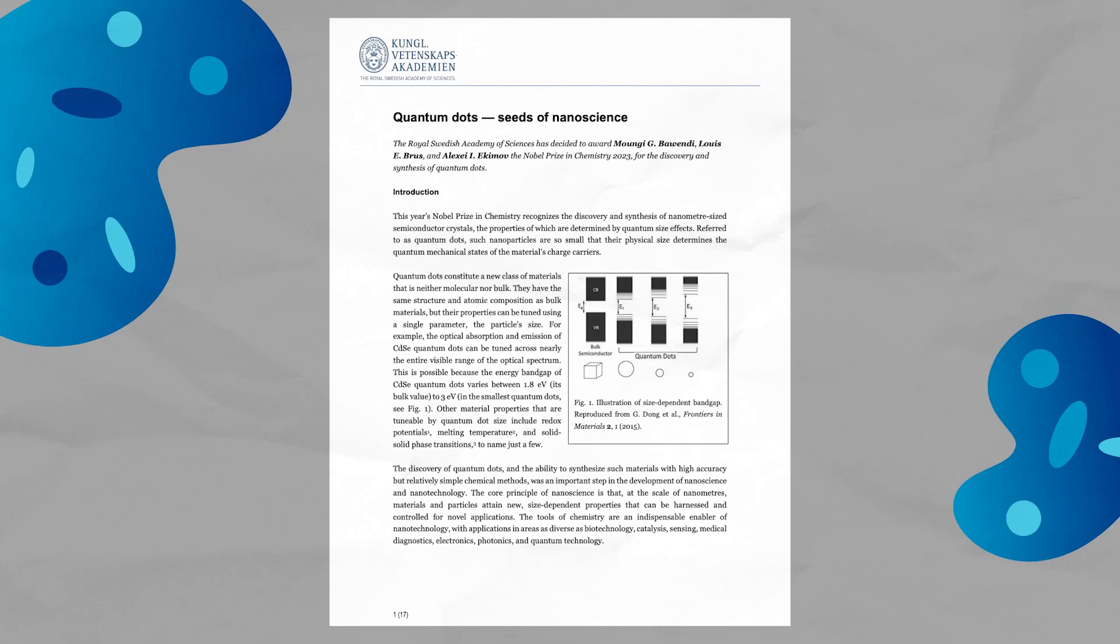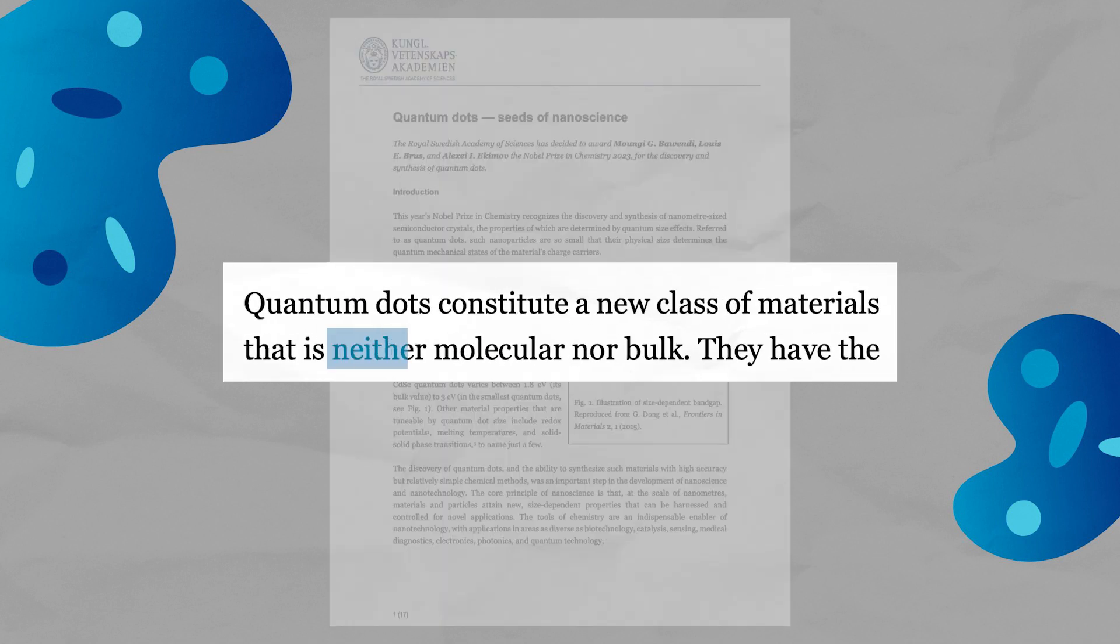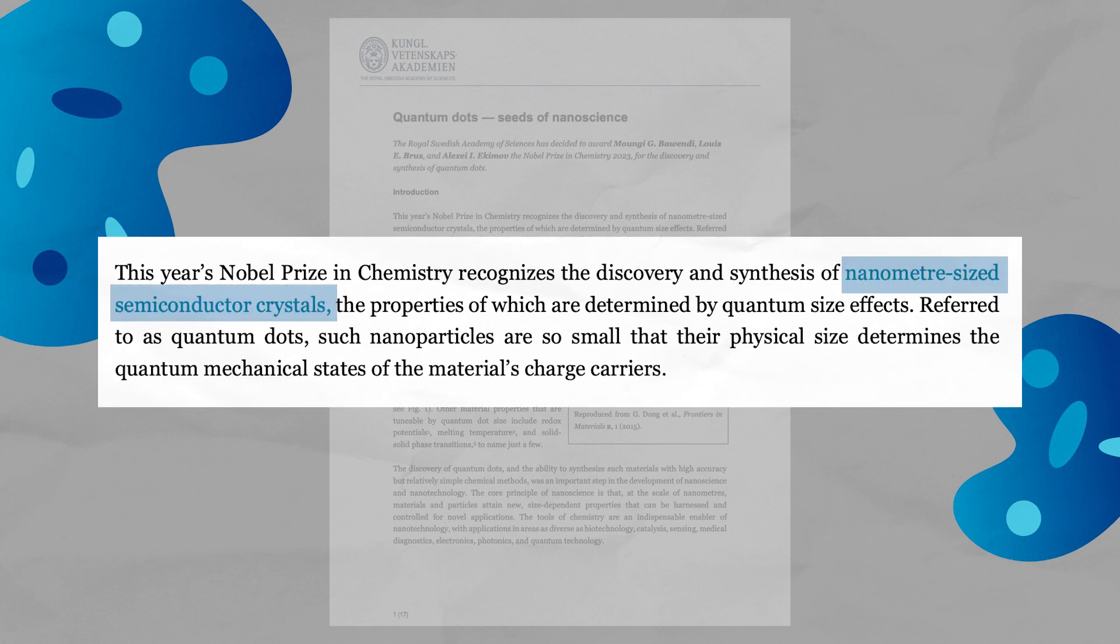Quantum dots, as described in the Nobel paper published by the Royal Swedish Academy of Sciences, are neither molecular or bulk materials, and constitute a new class of materials known as nano-sized semiconductor crystals.